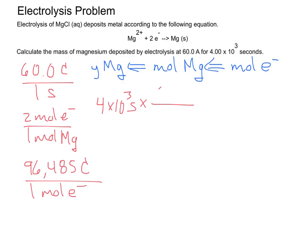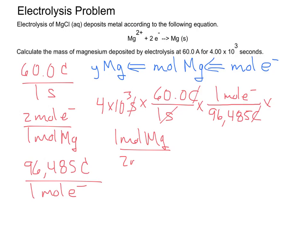We want to cancel out seconds, so we use our current. Seconds are canceled. We want to cancel out coulombs, so we use the Faraday constant. Coulombs are gone. And then we want to cancel out moles of electrons, so we have one mole of magnesium over two moles of electrons. Moles of electrons are gone.